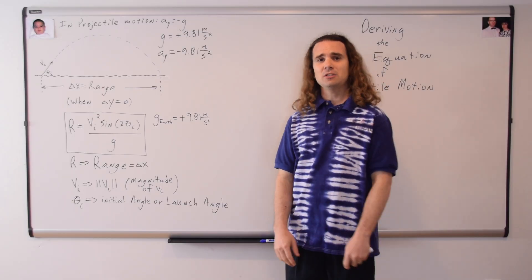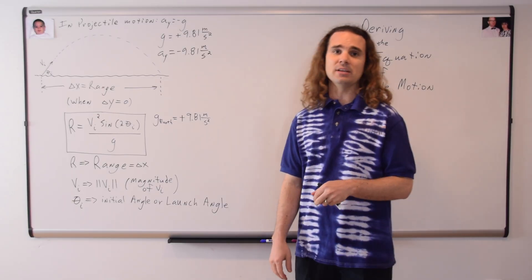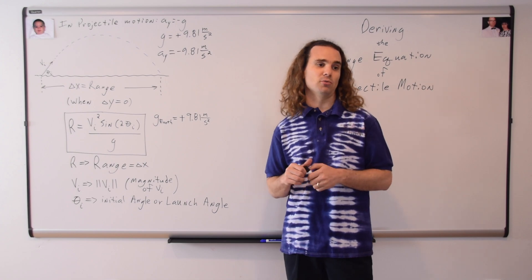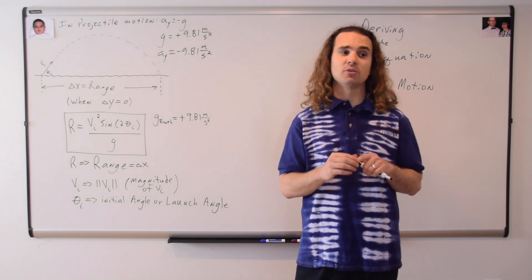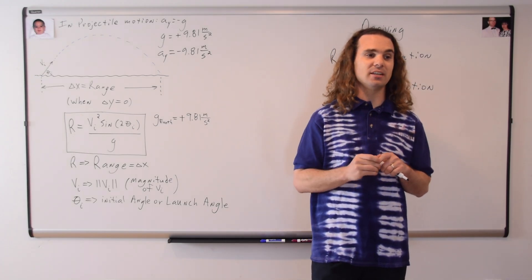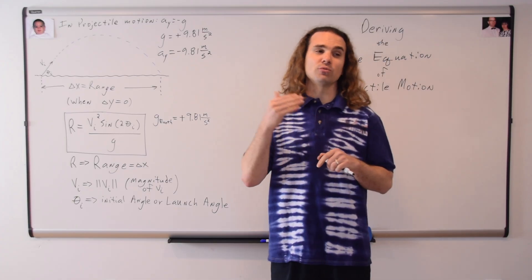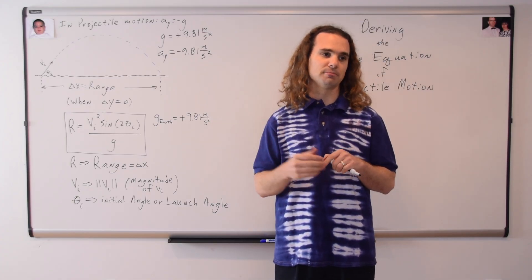Alright, let's begin deriving the range equation. Billy, could you please break the initial velocity into its components? I thought that when we used the range equation, we used the initial angle and the magnitude of the initial velocity — we did not resolve the initial velocity into its components. Correct. You do not need to break the initial velocity into its components in order to use the range equation. However, in order to derive the range equation, you do.